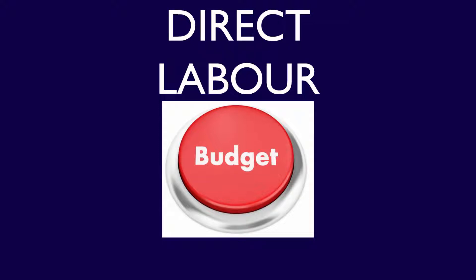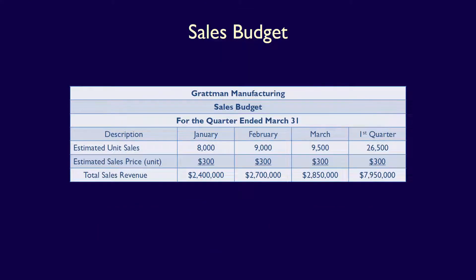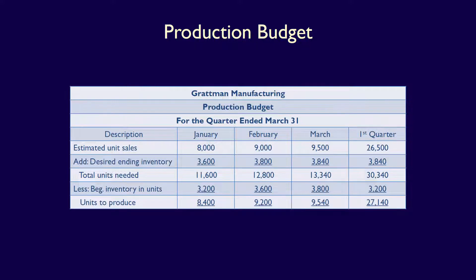We're going to continue with our master budgeting process and prepare a direct labour budget. We've already completed three of Gratman Manufacturing's operating budgets in our previous videos. The sales budget estimated the number of units the company is expected to sell and the sales revenue they will earn. The production budget shows the number of units to produce, not only to meet expected sales, but also to ensure the company has safety stock.